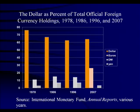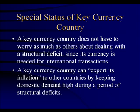The US dollar declined relative to the Deutschmark and the Yen through the 1990s, and then the Euro basically became the key alternative to the dollar after 2001. A key currency country does not have to worry as much as others about dealing with structural deficits. Its currency is needed for settling international transactions and needed to be held outside the country in the form of reserve deposits.